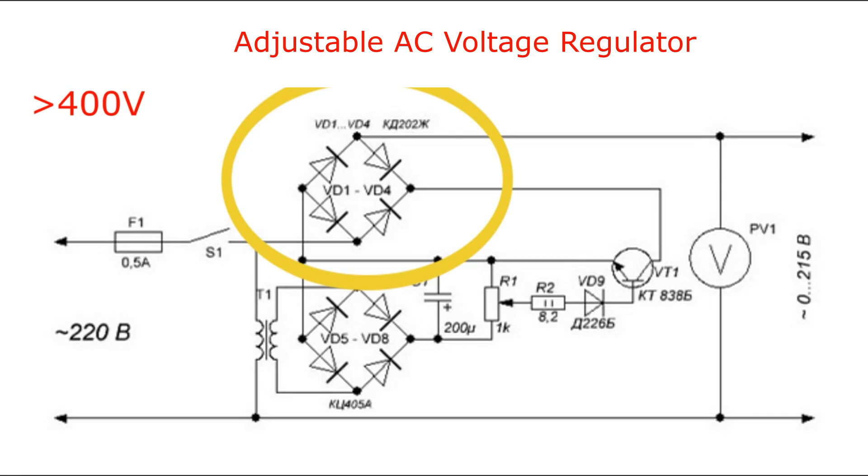Transistor T1 must be mounted on a heatsink. Variable resistor R1 must be a wire wound resistor with a minimum power of 2.5 W. To increase the load power, it is recommended to replace the regulating transistor.